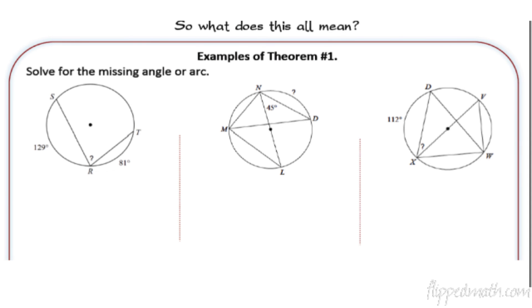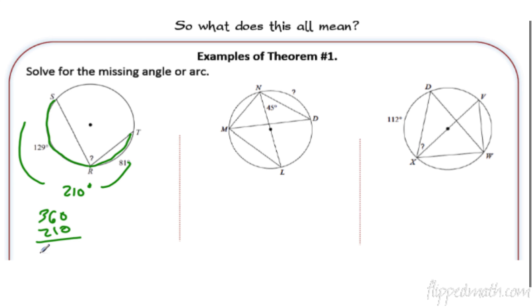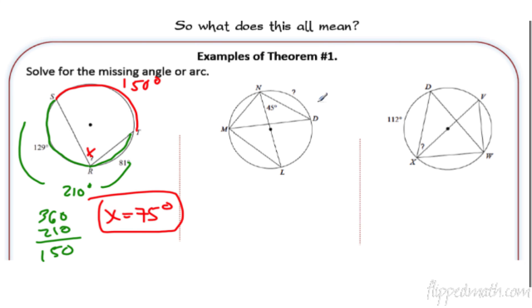First example: they tell us the measure of this arc here is 129 and this arc here — they're adjacent, they're touching each other — so I can add them together, giving me 210 degrees. That's the entire arc. If I take 360 away 210, that's going to leave me with 150. So this arc equals 150 degrees. The inscribed angle that intercepts that arc equals half of 150, so x equals 75 degrees. It's half of 150. Done with that one.